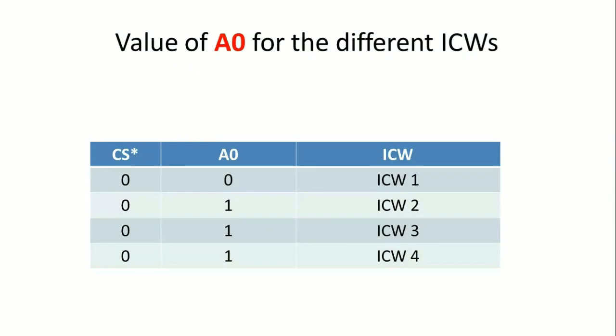There is one important point: here we have only one address line for the 8259 PIC, and that address line is A0. This A0 line is used to communicate with the chip, that is the 8259 PIC. The initialization control words are selected using this pin, and it is obvious that ICW1 uses a port address different from the other three initialization control words.